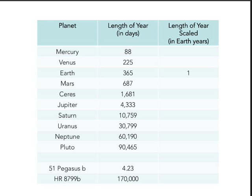I've also listed yearly motions for a couple of extrasolar planets — this is my research area, so you'll hear me mention these. An extrasolar planet means a planet around a star other than our Sun. The first extrasolar planet discovered was 51 Pegasus b, which has an orbital period of 4.23 days. Another planet, HR 8799b, discovered in 2010, has an orbital period of 170,000 days.